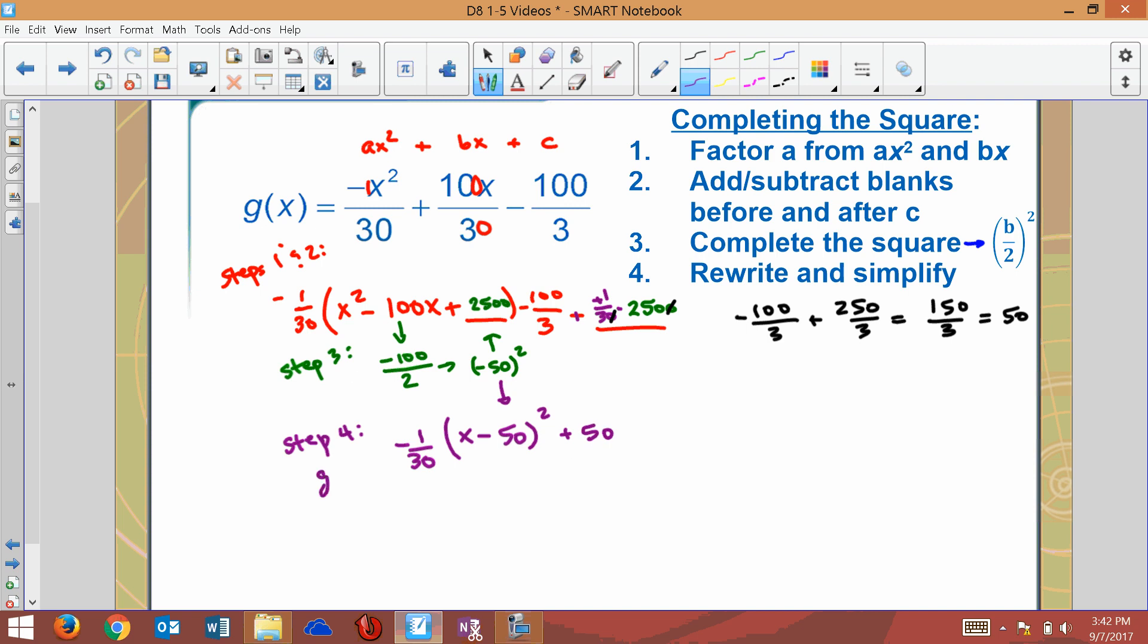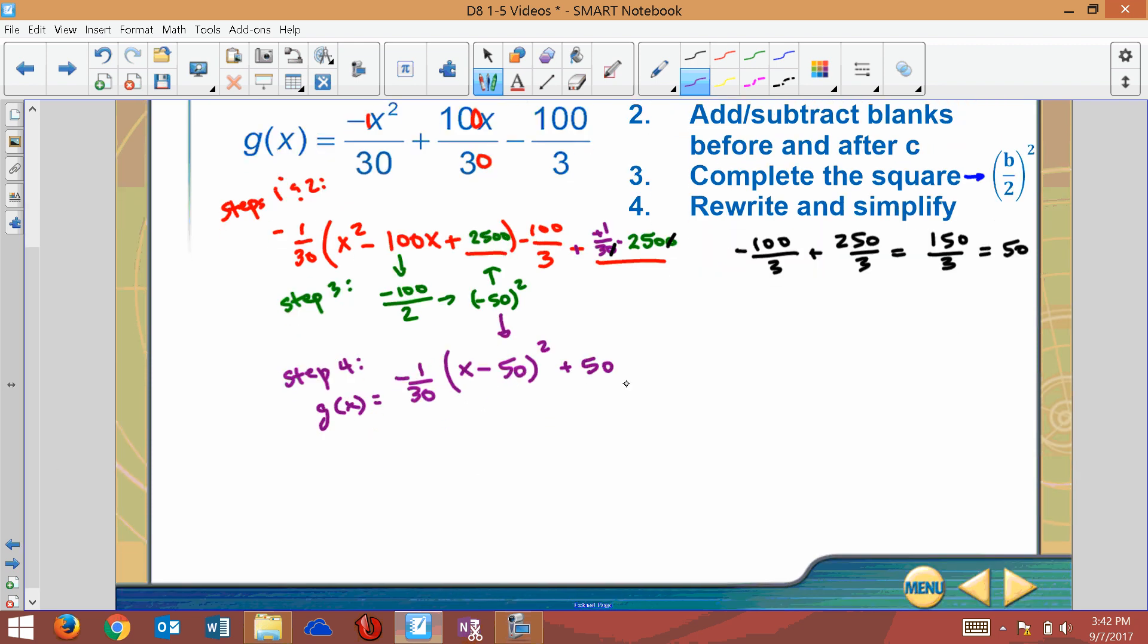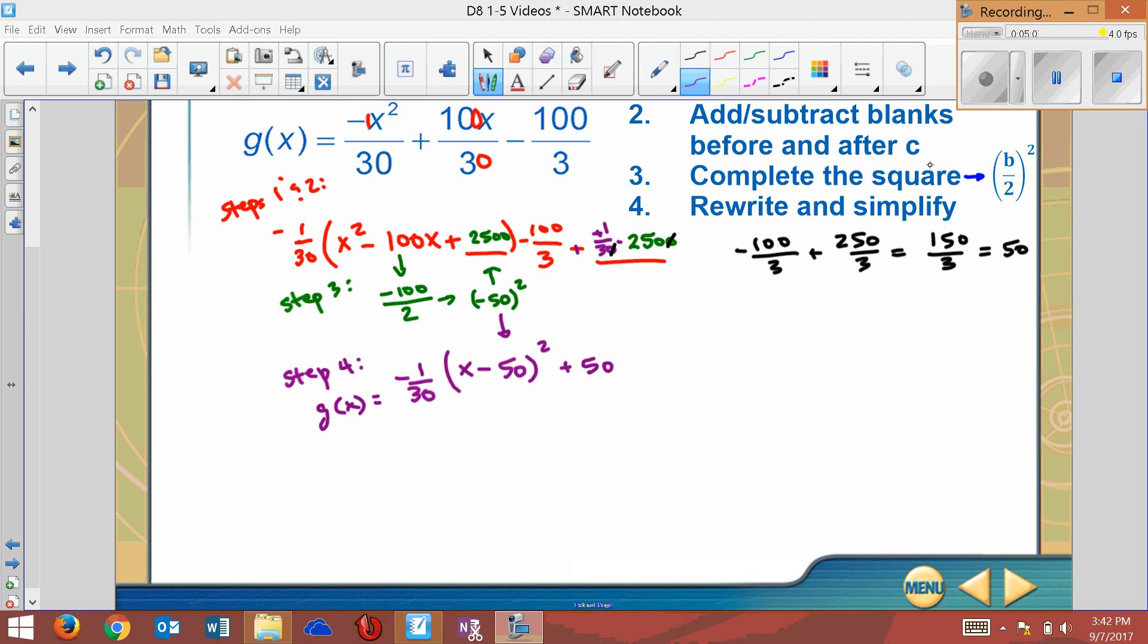Now I can name everything else on this equation. I can name my transformations. If you want to pause, you can pause the video and try to name - there's one, two, three, four transformations - see if you can name them and then pick back up. Here are the transformations: I have a reflection. It's outside, so it's vertical, meaning over the x-axis. I have a vertical shrink - again, it's on the outside. This is inside, so it's horizontal - it's a shift right 50 because it's backwards. This is outside, so it's vertical and normal - shift up 50. Now let's look at the next part of this problem.